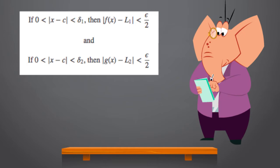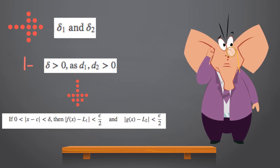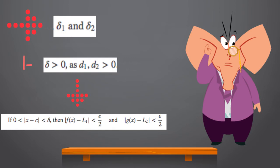Suppose delta was the smaller of the two values delta_1 and delta_2. First, notice it must be the case that delta > 0 as delta_1 and delta_2 are greater than 0. Further, it should also then be true that if 0 < |x - c| < delta, then |f(x) - L1| < epsilon/2 and |g(x) - L2| < epsilon/2. Adding the inequalities together,